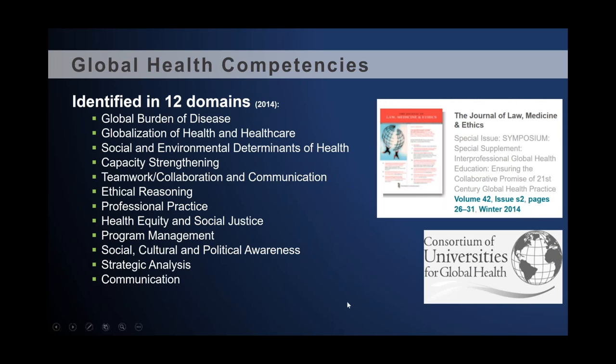In terms of competencies, we want to ensure that our students come out not just with a broad survey of concepts, but with something to contribute in the practice of improving global health. CUGH has been active in this space with a very engaged education committee that has done tremendous work across disciplines and countries. Work done in 2014 identified 12 different domains of content area, as well as frameworks such as ethical reasoning, health equity, social justice, concrete skills like the ability to manage programs administratively, understanding cultural context, and communicating effectively.